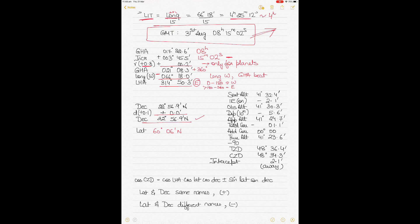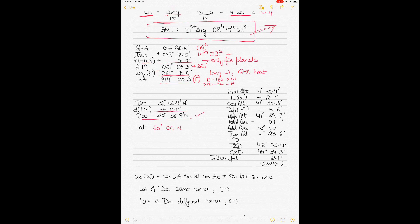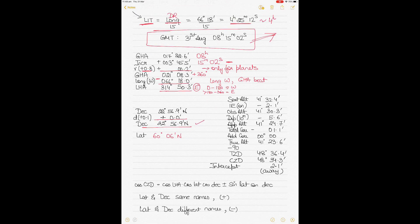The sextant altitude given is 41° 32.4'. Index error is 2.1' on the arc — on the arc means subtract. Subtracting gives observed altitude of 41° 30.3'. Then I find the dip correction for a height of eye of 10 metres. Before that, I'll also determine the apparent altitude. The dip correction is always subtracted, so my apparent altitude will be 41° 24.7'.